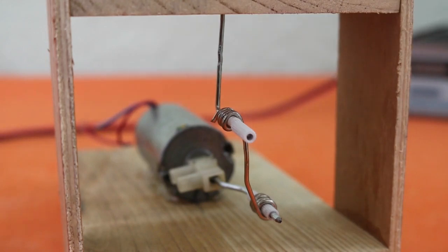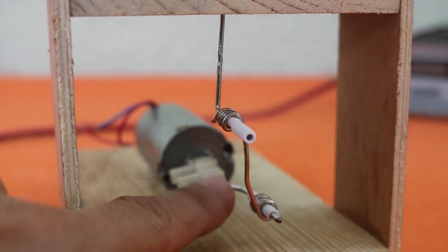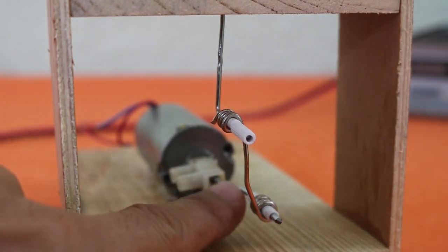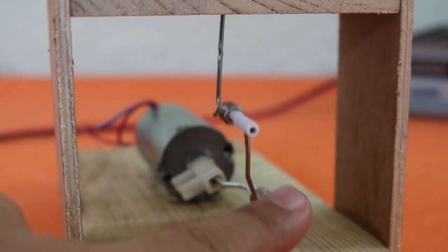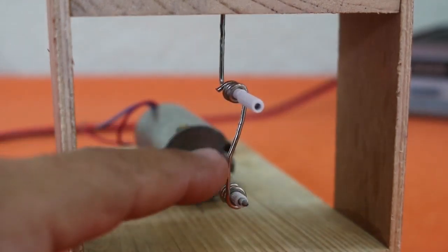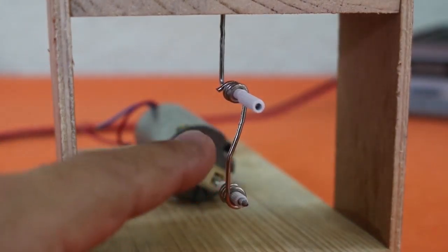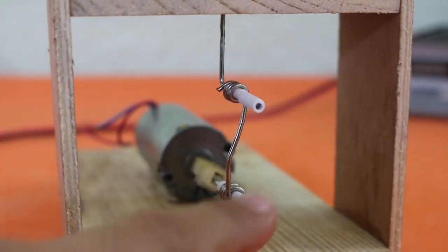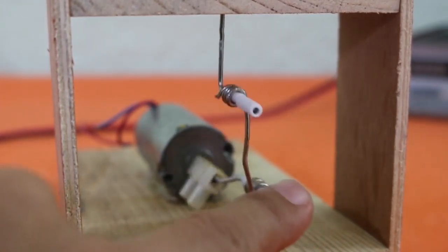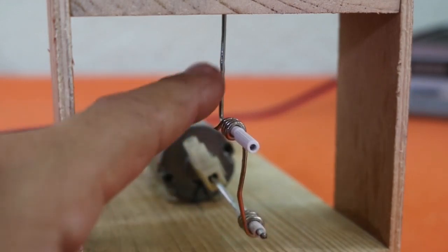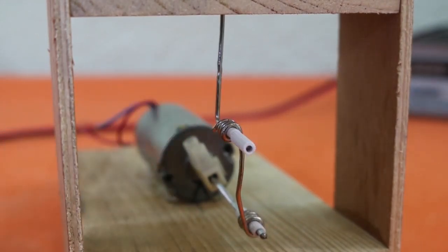And here we can see the full mechanism. In fact, it works the same as in the internal combustion engine. This part here, that is attached to the motor, would be the crankshaft. And when it rotates, it moves this connecting rod that is attached to the axis that moves up and down. And that would be the piston in a combustion engine.